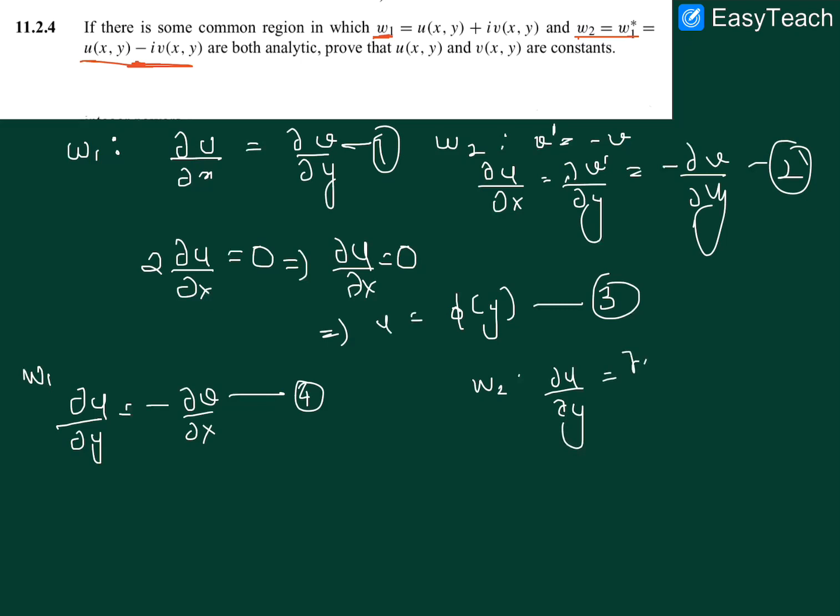and dv dash minus of dv dash by dx. So we put v dash as minus v, so we get plus dv by dx. That is our equation 5.